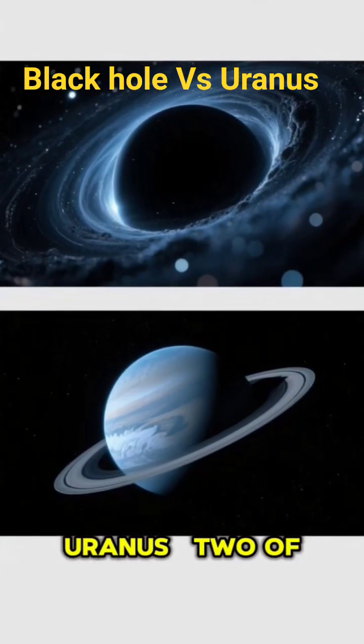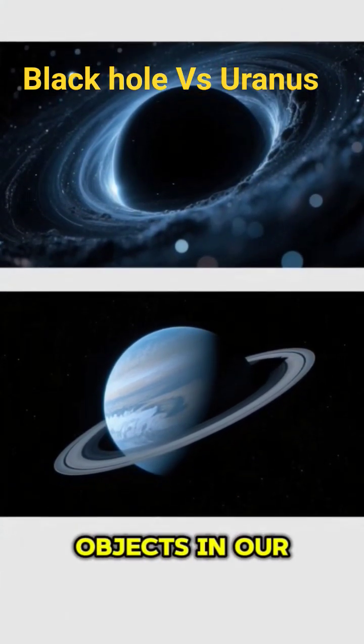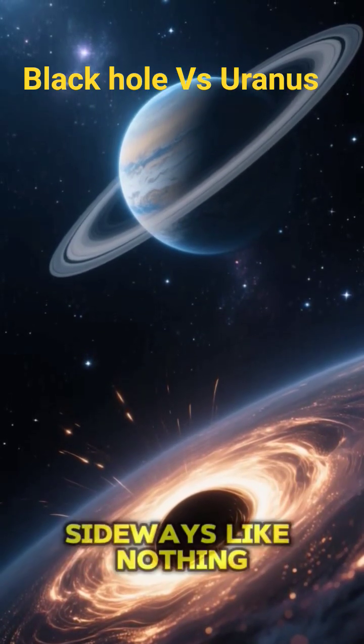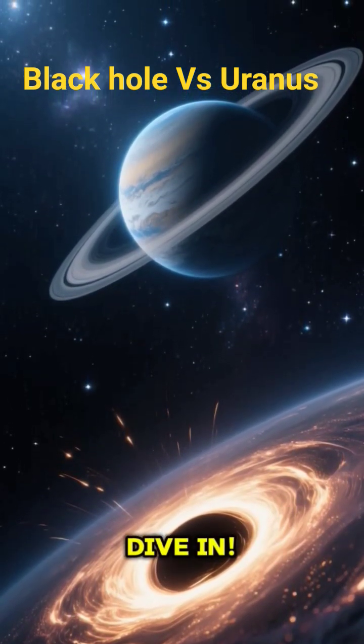Black holes and Uranus. Two of the most mysterious objects in our universe. One can crush light itself. The other spins sideways like nothing else in the solar system. Let's dive in.